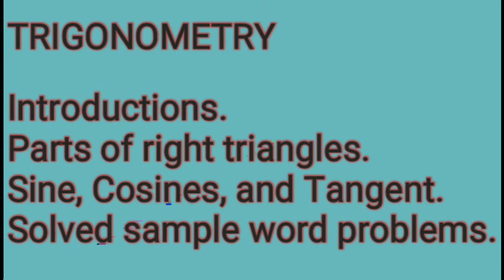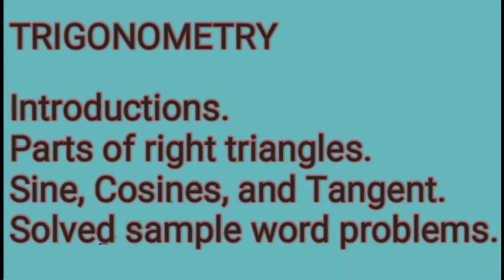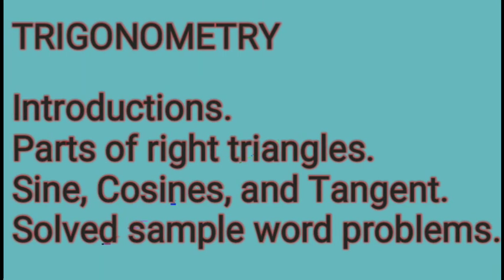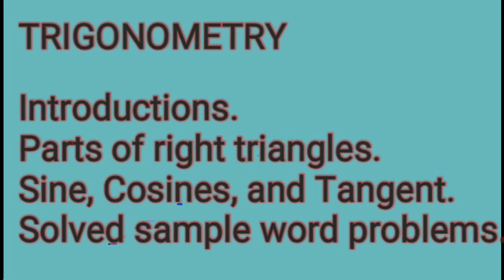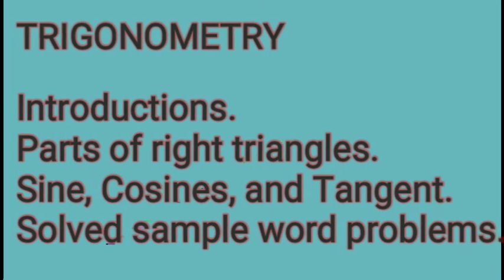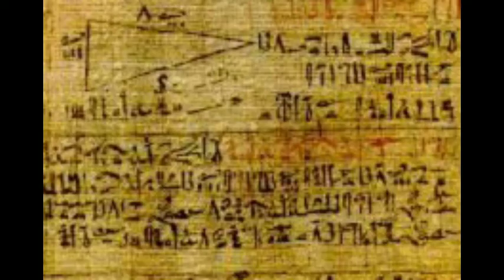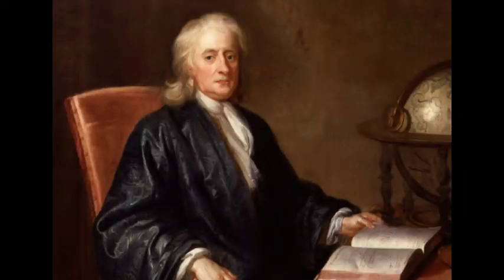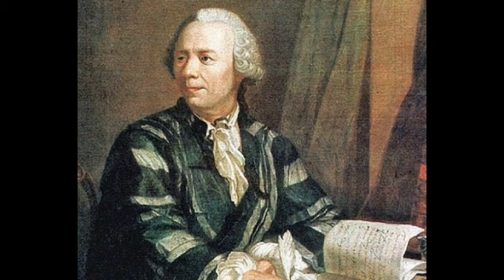Our topic for today is about trigonometry. It is defined as the branch of mathematics which involves the relations of the sides and angles of triangles. The history of trigonometry traces back from the times of the Egyptians during the second millennium BC up to the era of the mathematician Isaac Newton and the Mozart of mathematics, Leonhard Euler.